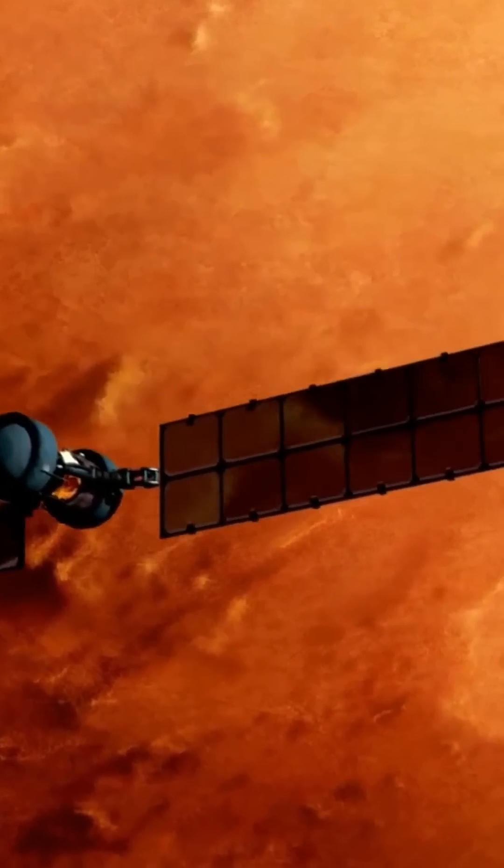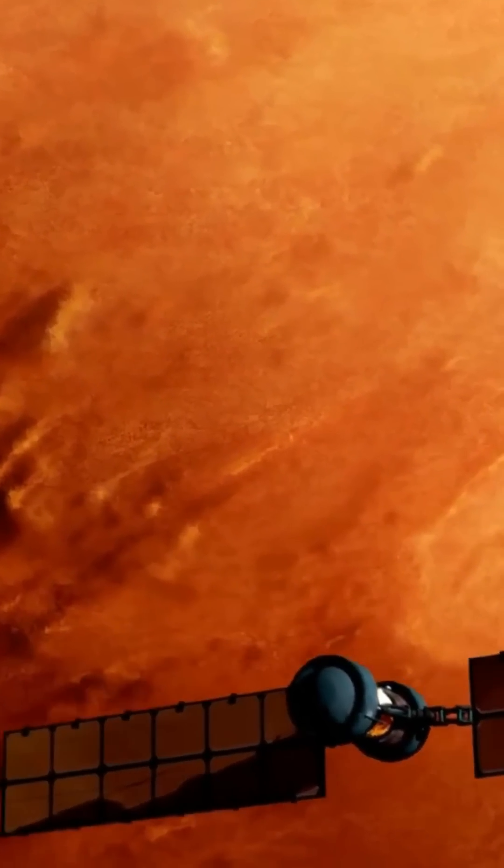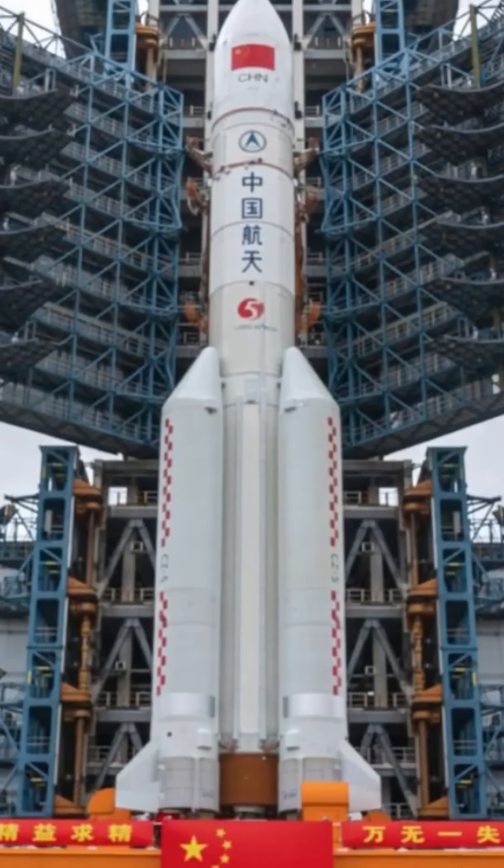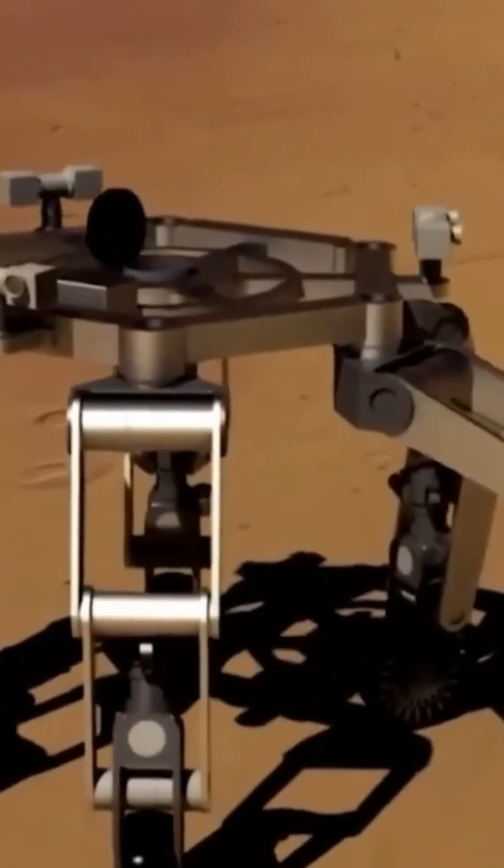It all begins in 2028 with Tianwen 3, a mission to collect soil samples from Mars and return them to Earth, searching for traces of past or present life. In 2029, Tianwen 4 will head for Jupiter and its moon Callisto to explore their potential for habitability.